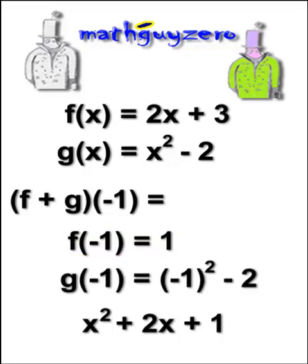Repeat the process with g(x). Every time you see an x, replace it with negative one. It comes out to (-1)² which is 1, minus 2 is negative one. Then you can simply add those together, and you get zero.